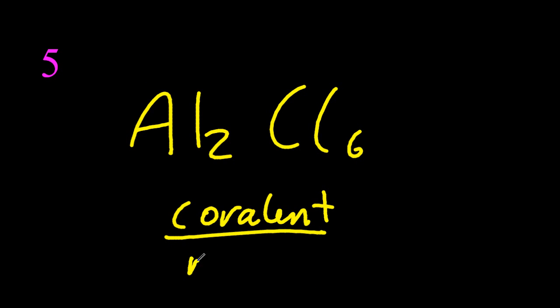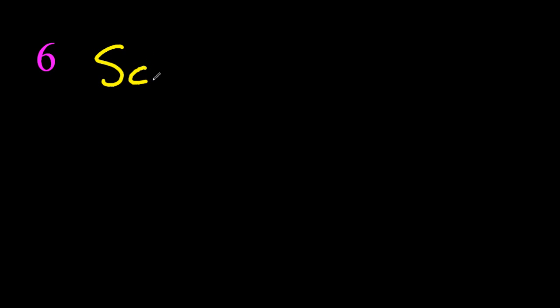Aluminium chloride is covalent with all that that implies because it's not an empirical formula. AlCl3, that would imply ionic. It's covalent.